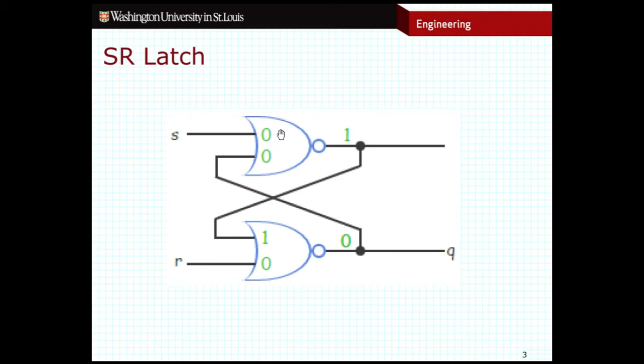So the way that a NOR gate works, if S is equal to 1, I know that the output will in fact be 0. So S is equal to 1 means that this output is 0, which gets fed into the second NOR gate. So this output is now 0.